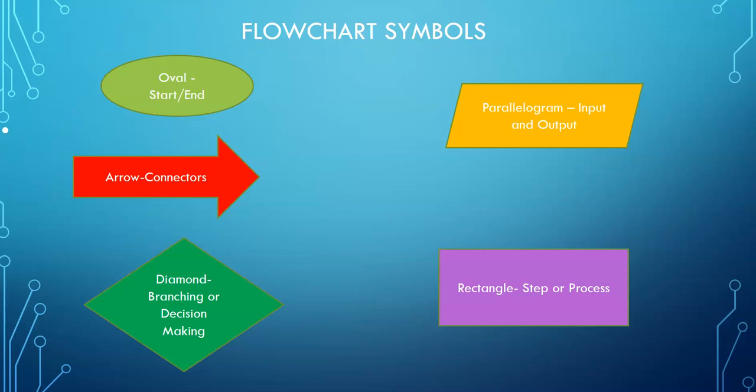Then the parallelogram is for the input and output. If you are to do step one, step two, it's an input, and then almost the last thing we need to do there should be an output. Then you have to finish again with a start and end symbol, which is an oval.